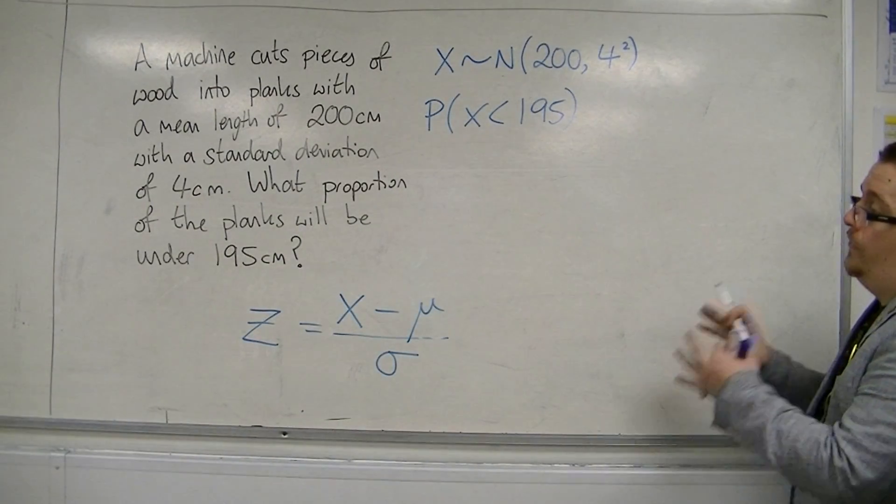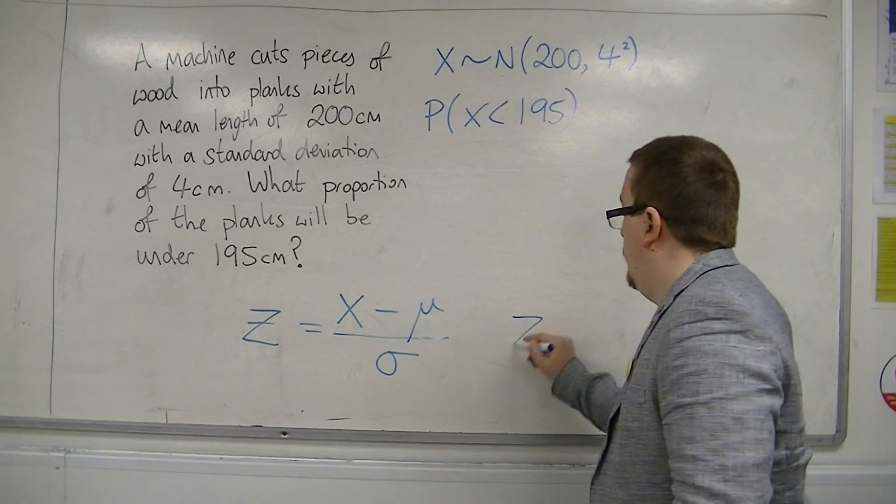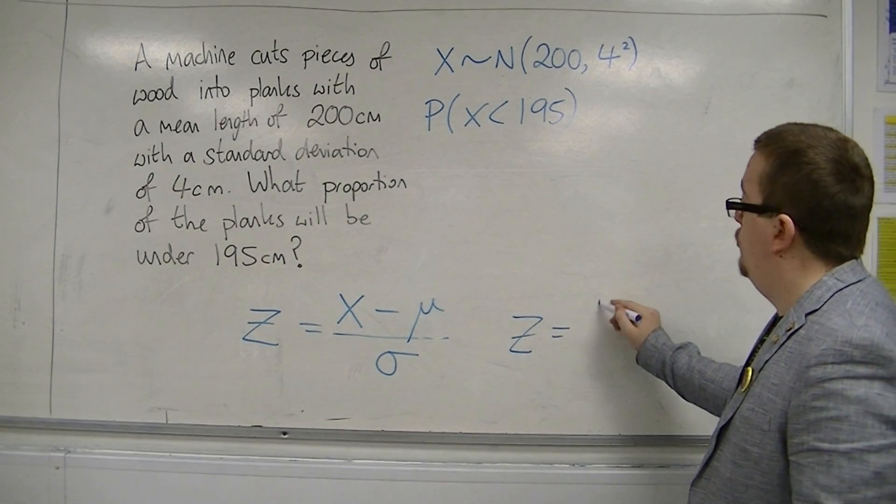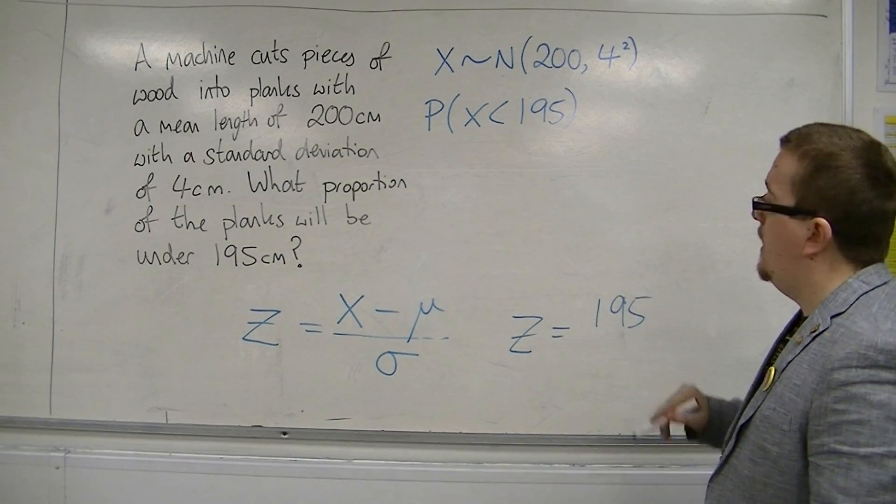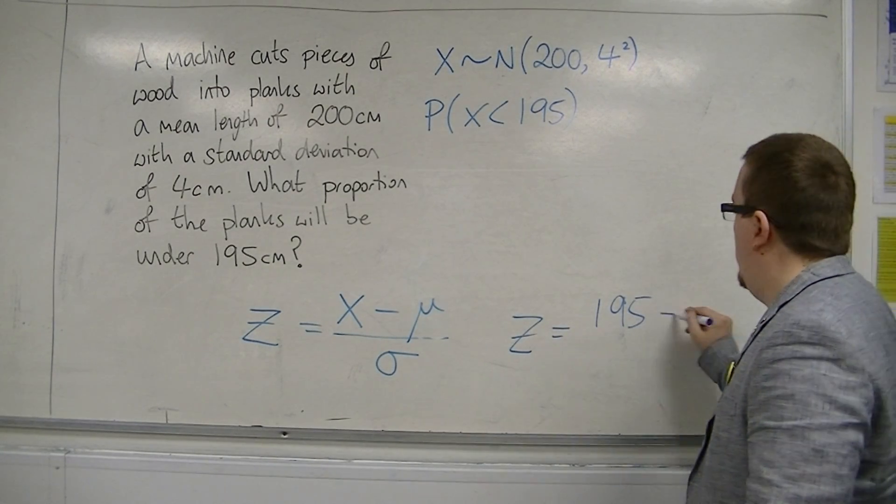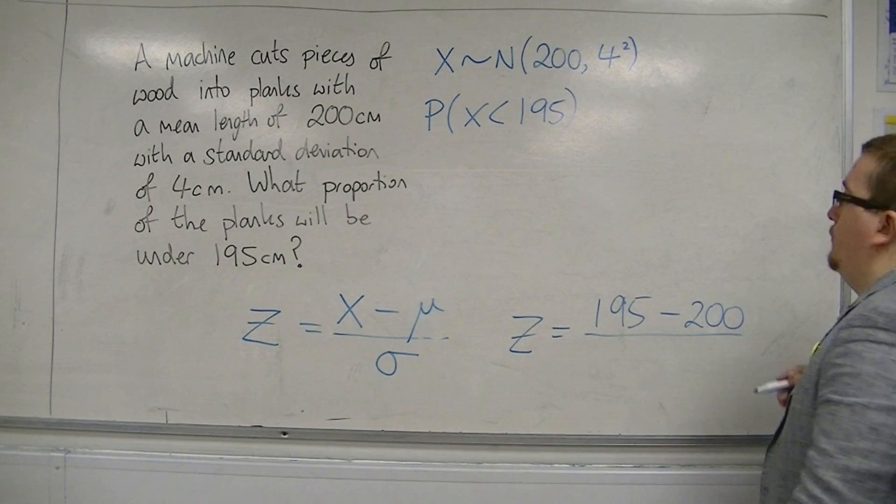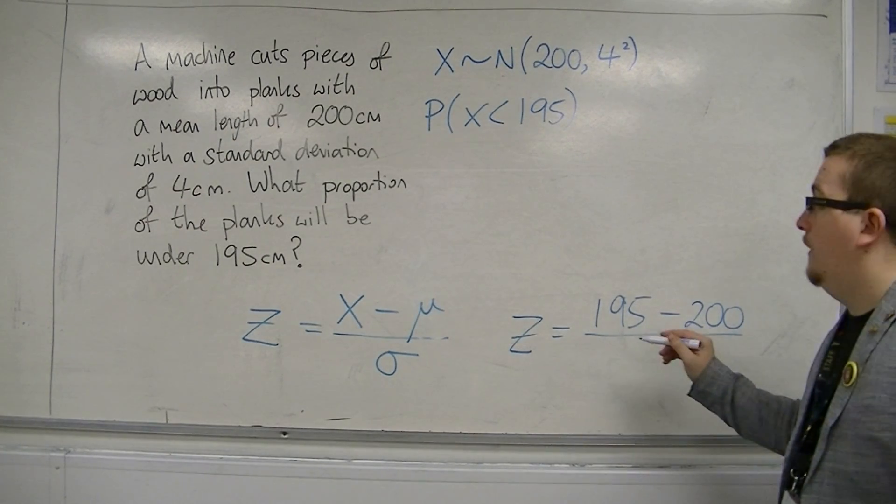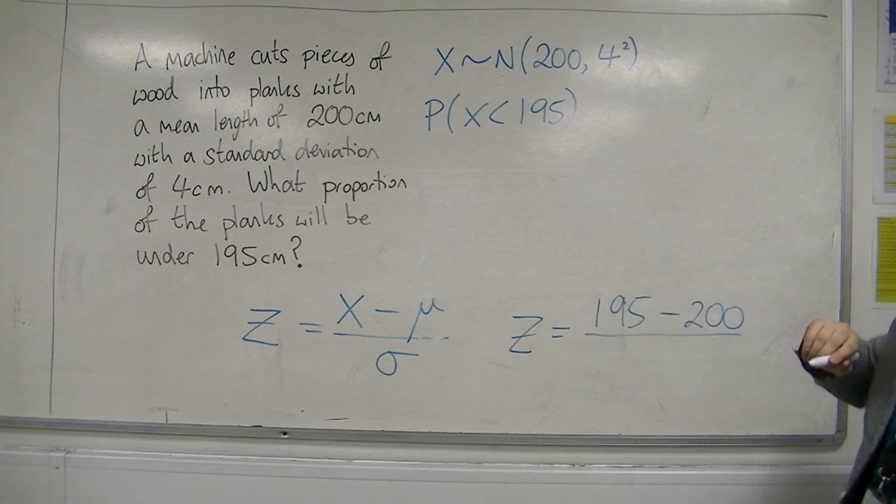To find the Z that we're currently using, Z will be equal to 195. That's the X that I'm working with that I want to use. Take away the mean, 200, and divide by sigma, which is 4.